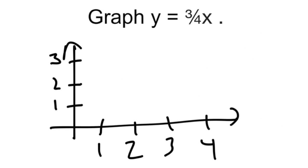Graph Y equals 3 fourths X. And because the equation looks like Y equals a slope times X, we know it's a proportional relationship. So immediately, we know that it's going to go through the origin.